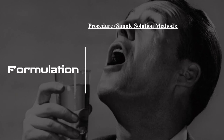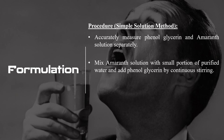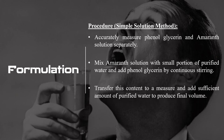Moving on to the procedure for preparing phenol gargle BPC using the simple solution method. Steps: First, accurately weigh phenol glycerin and amaranth solution separately. Second, take amaranth solution and mix it with a small portion of the purified water — from the 30 ml total, take a small portion. To that, add amaranth solution. After mixing, add phenol glycerin by continuous stirring. Then transfer the content to a measuring cylinder, add the remaining portion of purified water, and make up the volume to the final 30 ml required.